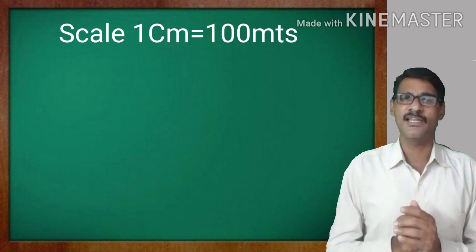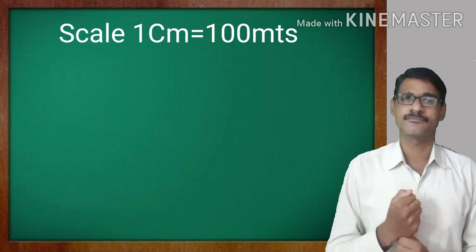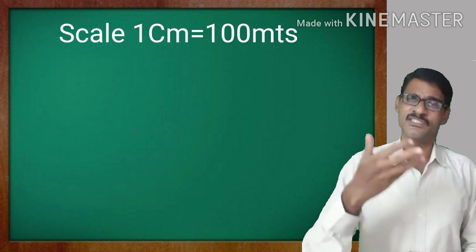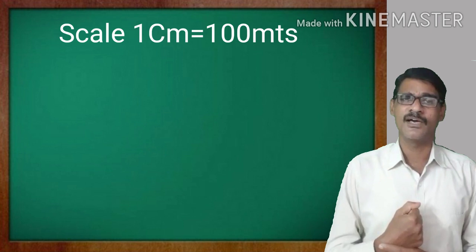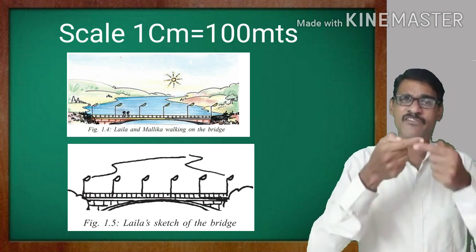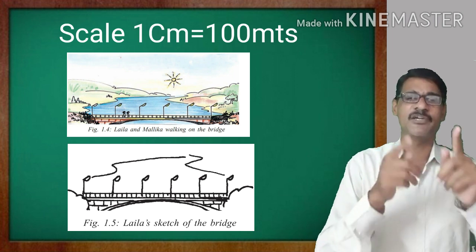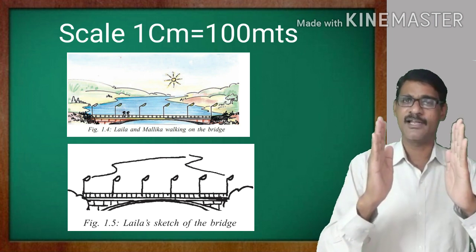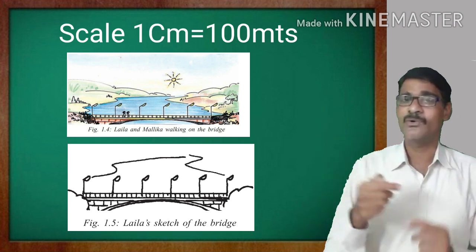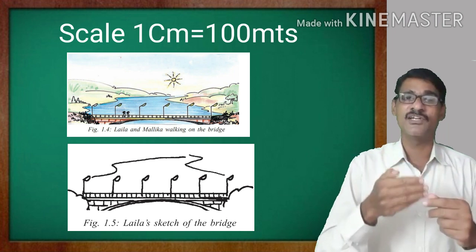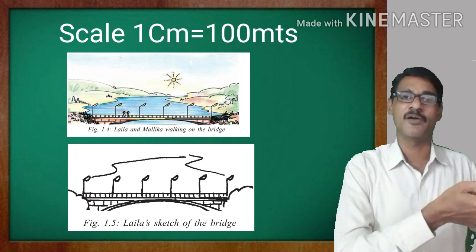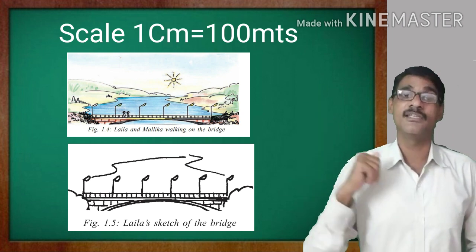We can show that scale on the map, and with the help of that scale we can understand and measure distances easily. For example, if the scale is 1 centimeter on the map equals 100 meters on the actual place, then when we measure 1 centimeter between one pole to another on the map, the actual distance is 100 meters. If we measure 3 centimeters on the map, that equals 300 meters.